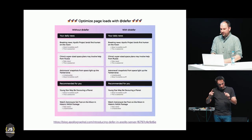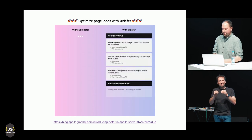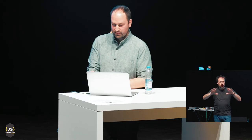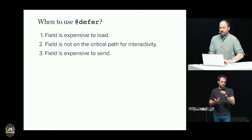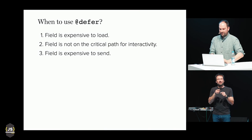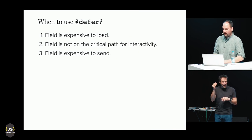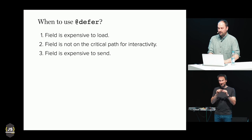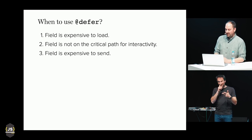This is a good example of what defer would look like to an end user — there are multiple levels of defer and data is incrementally rendered as it's loaded. Without defer, the whole page loads only when the last piece of data arrives. There are three cases where using defer is very useful: first, when a field is expensive to load — maybe uncached data or data requiring a lot of computation; second, when a field is not on the critical path for interactivity, like a comment section; and third, when a field is expensive to send — there's a lot of data and it will be slow to send over slow networks.